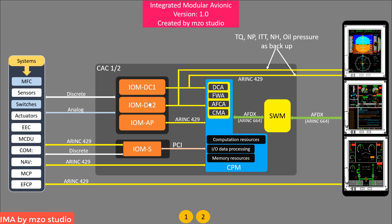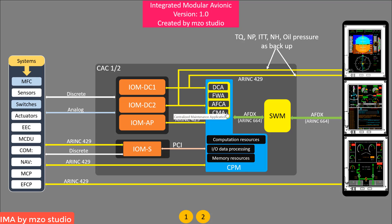The IOM has four sub-modules: IOM DC1, IOM DC2, IOM AB, and IOM S. The CPN hosts four applications: the data concentration application, the flight warning application, the automated flight control application, and the centralized maintenance application. We can install these applications from the ASTARnet. If we install the CPN software, the applications are already installed. The switching module has its own switching module application.